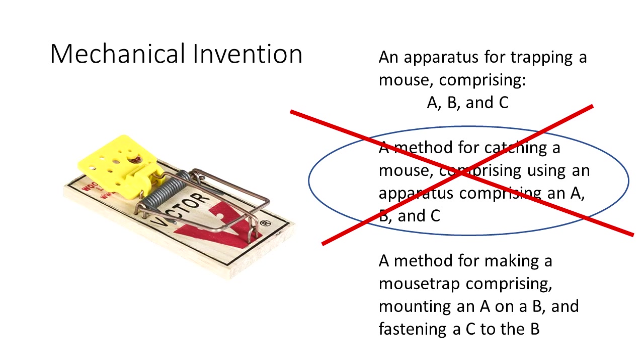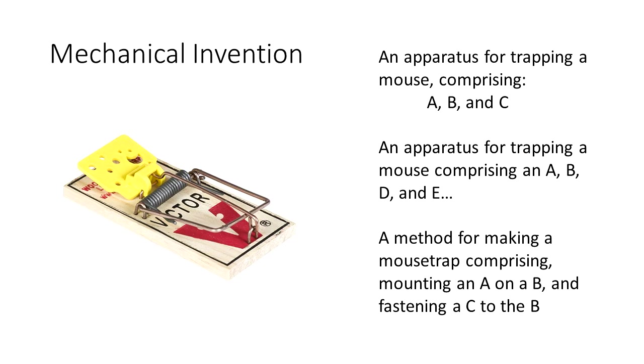In this case, with something like a mousetrap, it may be more trouble than it's worth. So we may forego this claim family and instead make a second apparatus independent claim, this one having A, B, D, and E. So it's different than the first one, but again focusing on the apparatus.